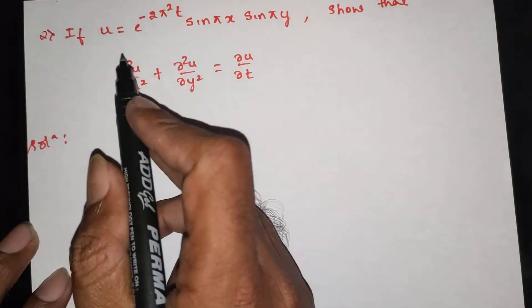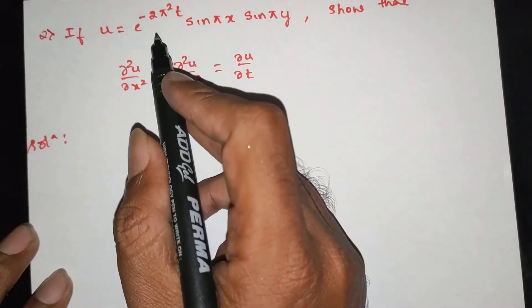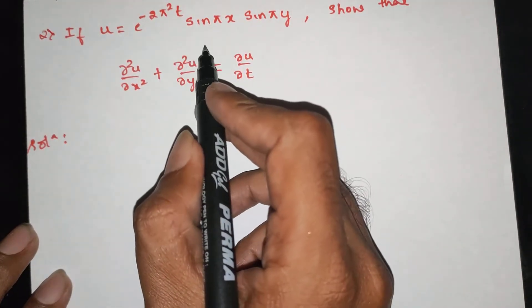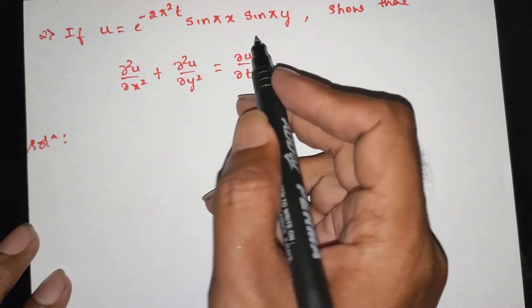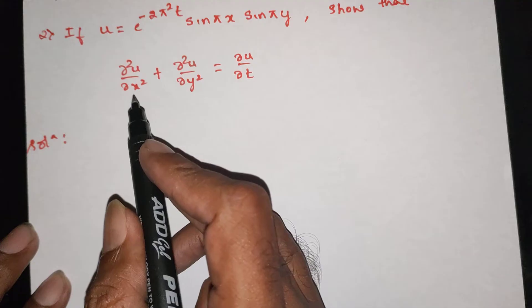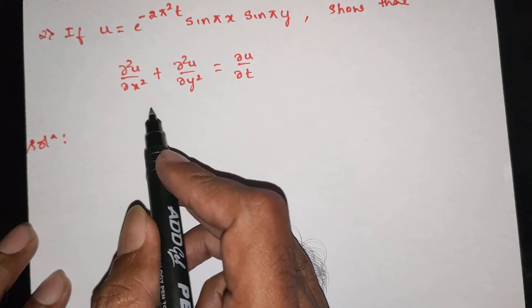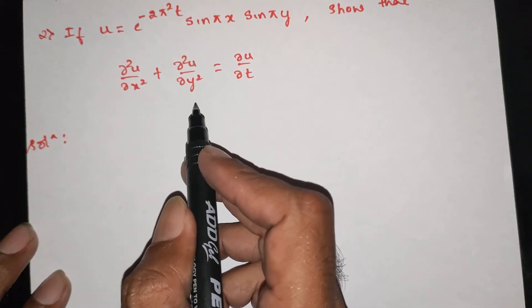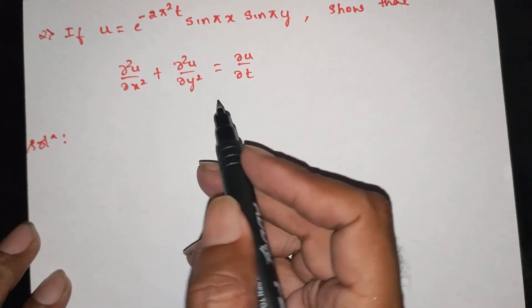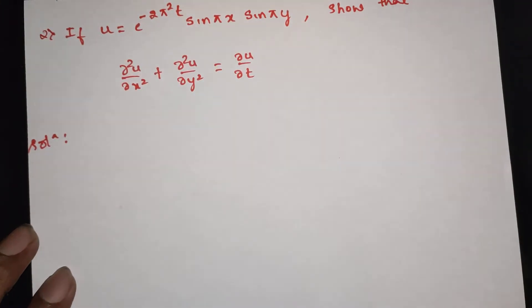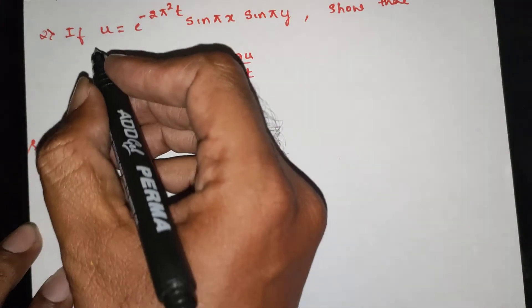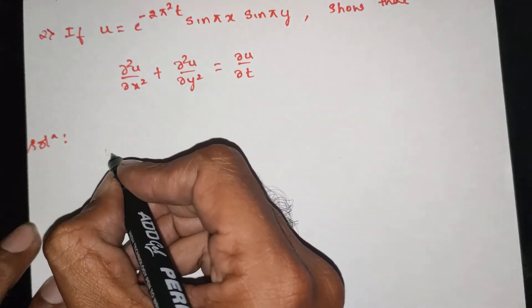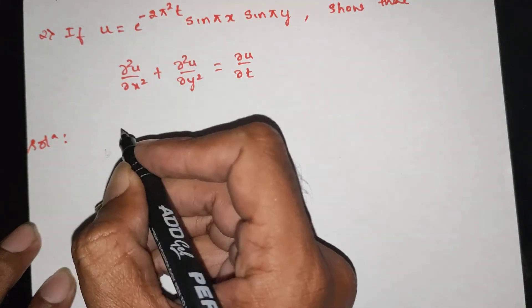Question: if u is equal to e power minus 2pi squared t, sin(pi x) sin(pi y), show that dou squared u by dou x squared plus dou squared u by dou y squared is equal to dou u by dou t. First, u is equal to e power minus 2pi squared t sin(pi x) sin(pi y).